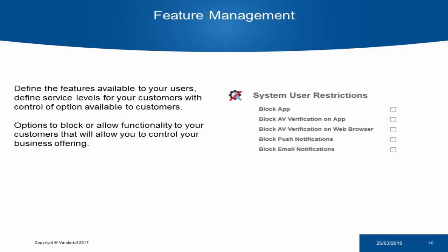Within SPC Connect, we want to allow you to have as much control as possible over the services you are offering. This is why we've developed the User Restrictions feature, which allows you to define the service offering you are providing to your customers. You can define the features available and block functionality — including blocking access to the mobile app completely, blocking AV on the app, and blocking push or email notifications. It is important to remember that if your panel is part of a company, when verification becomes active it will be available to your customers. If you wish to block this, you must select Block AV on mobile app, and users will not be able to see any verification on their mobile app.